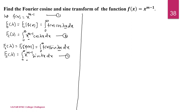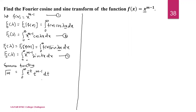Similarly, the Fourier sine transform of f of x is the integral from 0 to infinity of f of x sin(lambda x) dx, and we substitute the value of f of x. So equations 2 and 3 give us the Fourier cosine and sine transforms of x to the power m minus 1. We use the gamma function definition: gamma of m equals the integral from 0 to infinity of e to the power minus t times t raised to m minus 1 dt.